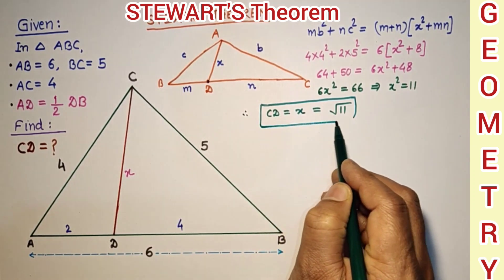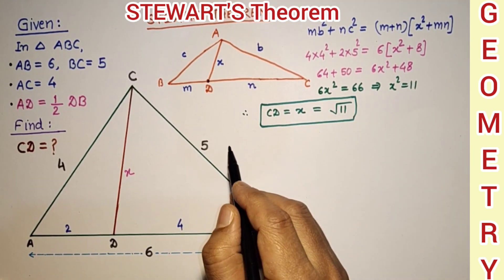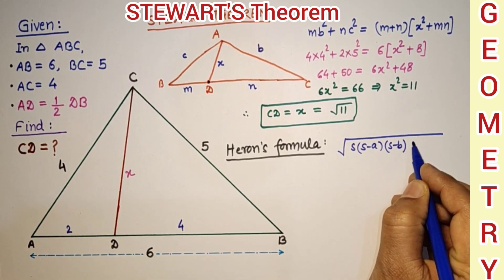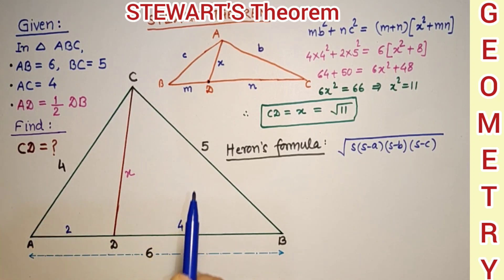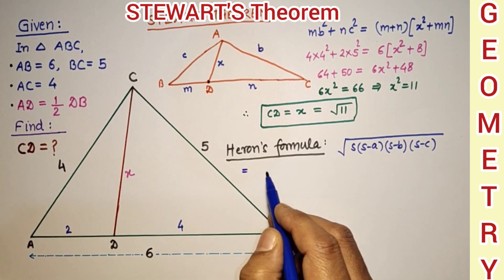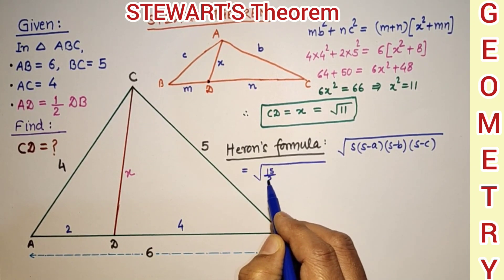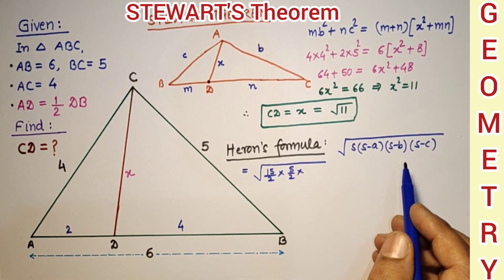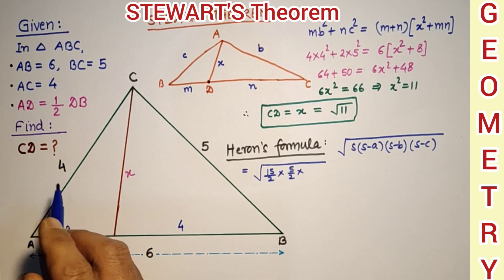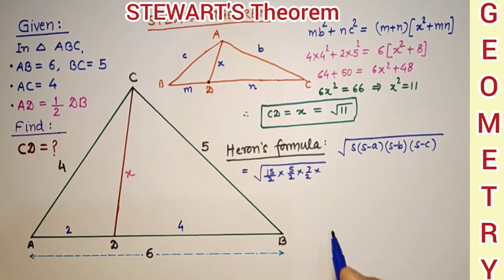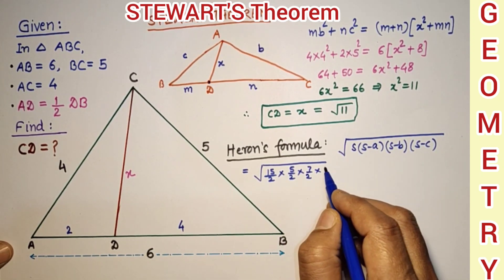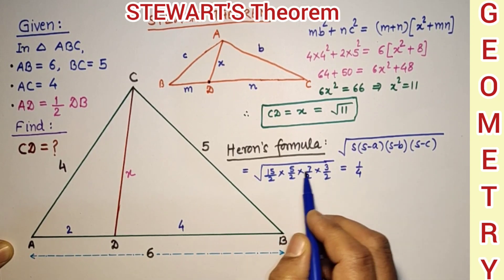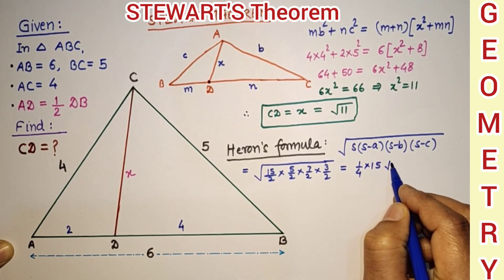Now using Heron's formula: area = √(S·(S−a)·(S−b)·(S−c)). The perimeter is 4 + 5 + 6 = 15, so S = 15/2. The area equals √(15/2 × 5/2 × 7/2 × 3/2), which simplifies to (1/4)√(15 × 5 × 7 × 3) = (1/4)√(15 × 105) giving us (15/4)√7.